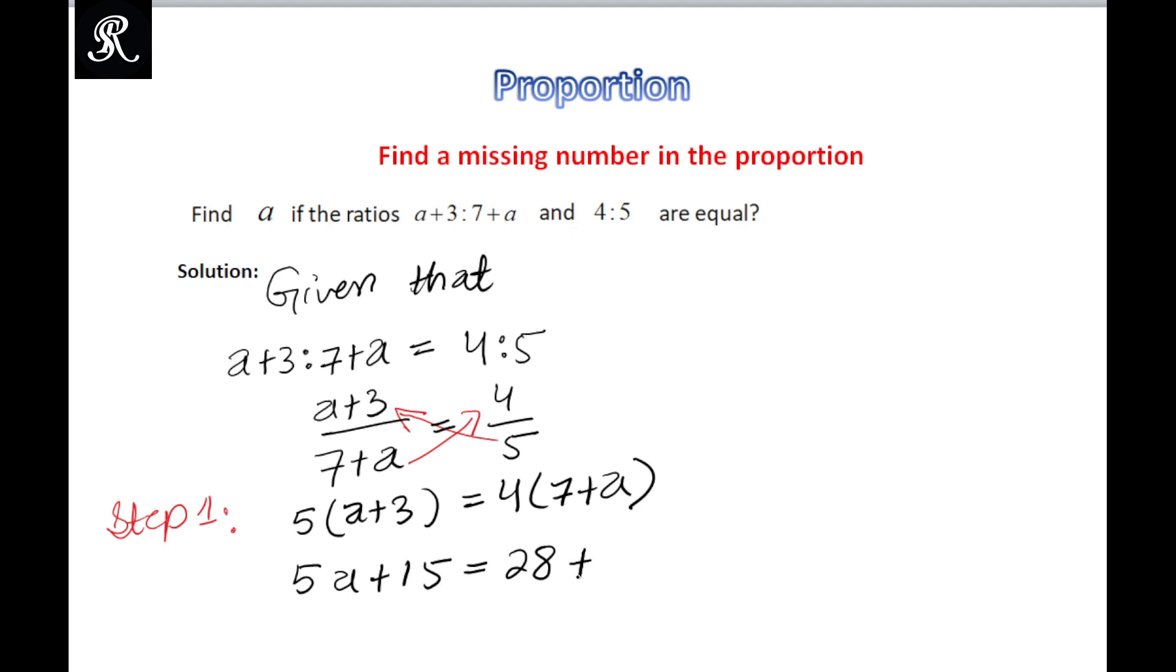Now we need to further simplify this equation. This is the second step: after cross multiplication, we need to solve the equation for the unknown variable. We have discussed in earlier videos how we can solve any equation or inequality for the unknown variable.